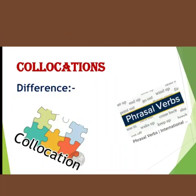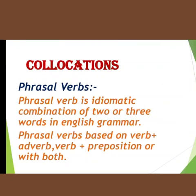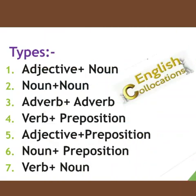Some people think that collocations and phrasal verbs are the same, but basically they are not. Collocations are a different thing; phrasal verbs are a different thing. Phrasal verbs are an idiomatic combination of two or three words — a verb used with an adverb, or a verb with a preposition, or sometimes verb plus adverb plus preposition. That combination of two or three parts of speech is called a phrasal verb. Now let's get down to the work.